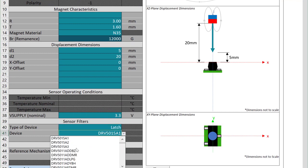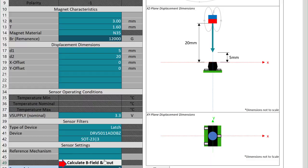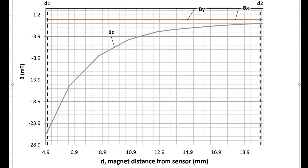Now we can click on Calculate B Field and Bout. If we look at the plot of the B field and focus on the BZ component, we can tell that the N35 disc magnet, when placed directly above the Hall sensor, will produce a field above the BRP needed to latch the output anywhere from 5mm to approximately 12mm. In our design, we have placed the Hall sensor 6.5mm away from the magnets.